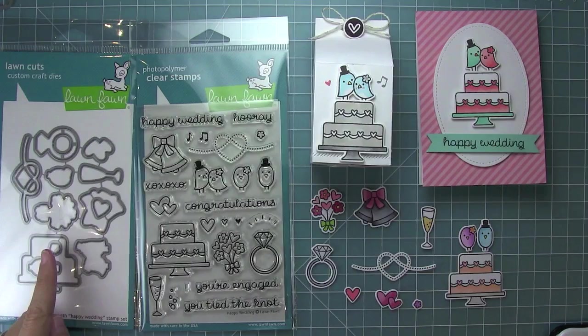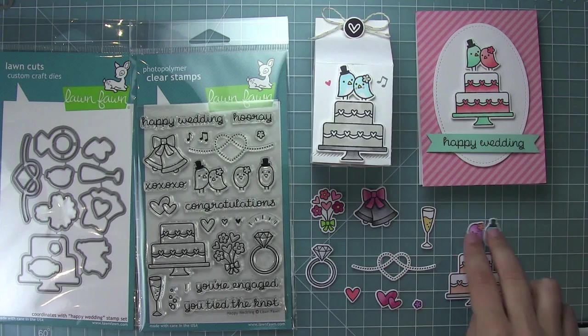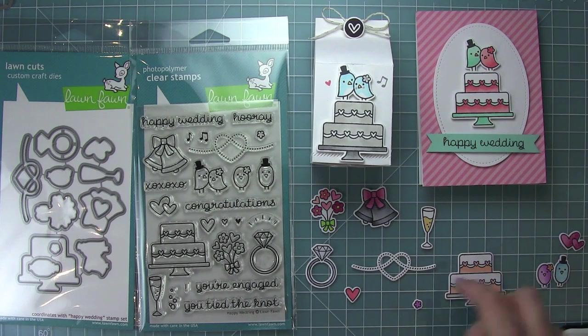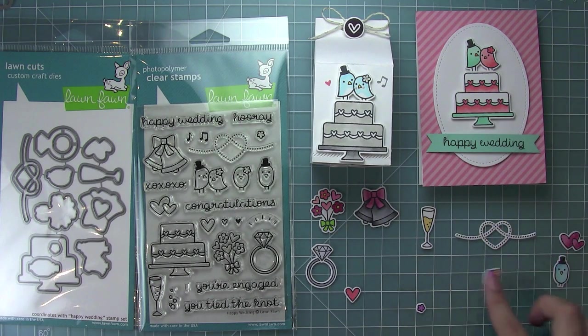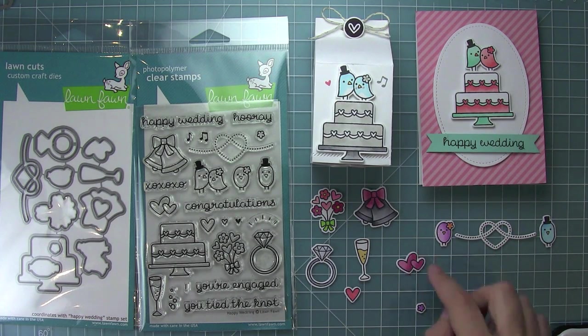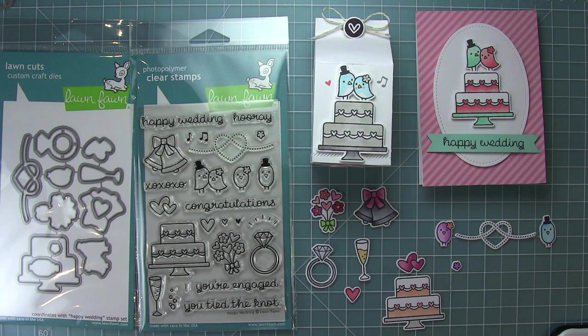So this is Happy Wedding and its coordinating dies. This set is so much fun. You can make cute favors or quick and easy cards. You can use different types of birds for the top of the cake there or the hearts too. So you can really kind of mix and match this set. You can also take that little knotted image and add the birds to either end of it and use the you tied the knot sentiment. That's one of my favorite ways to use this set too. So all of these little images are just so great for creating cute cards that you can customize for the recipients based on their wedding colors. I just love that idea. And I cannot wait to see what you guys do with this set. So thank you so much for watching and I hope you have an absolutely amazing day. Bye!